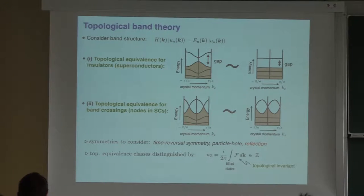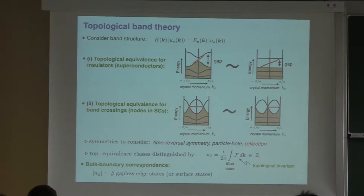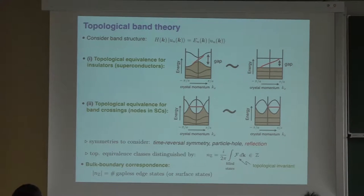A very important tool to label these different equivalence classes are the topological invariants. All band structures belonging to one particular equivalence class have the same topological invariant, typically given as an integral over the entire Brillouin zone of the Berry curvature summed over all filled states. The most important feature of topological band theory is the bulk-boundary correspondence, which tells you that this topological invariant equals the number of gapless states at the surface — for insulators this could be a Dirac cone state, for a gapped superconductor a linearly dispersing Majorana edge state, and for gapless systems, flat bands connecting the projections of two Dirac cones.